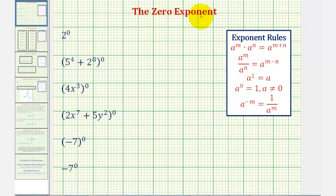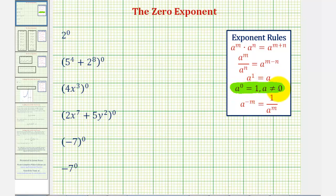Welcome to a lesson on the zero exponent. If we start by looking at the exponent rules given here on the right, notice that we're given that a to the zero power is equal to one, as long as the base a doesn't equal zero. Before we take a look at our examples, I think it's important that we understand why a to the zero is equal to one.